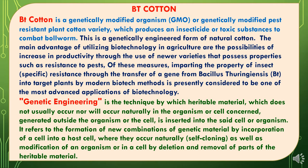So let's move to the presentation. BT cotton is a genetically modified organism (GMO), a genetically modified pest-resistant plant cotton variety which produces an insecticide or toxic substance to combat bollworm attacking the cotton crop. This is a genetically engineered form of natural cotton. The main advantage of utilizing biotechnology in agriculture is the possibility of increased productivity through newer varieties that possess properties such as resistance to pests. Imparting insect-specific resistance through the transfer of a gene from bacteria Bacillus thuringiensis (Bt) into target plants by modern biotech methods is presently considered one of the most advanced applications of biotechnology.